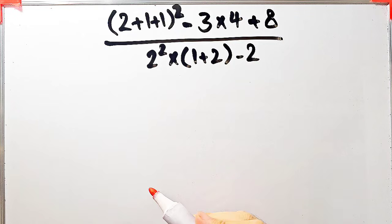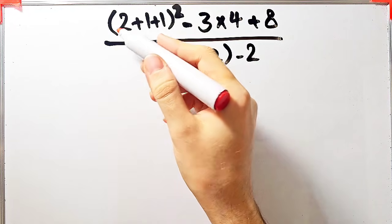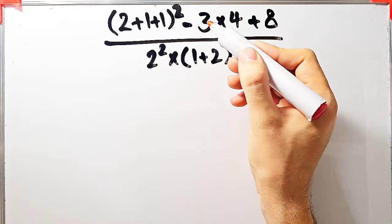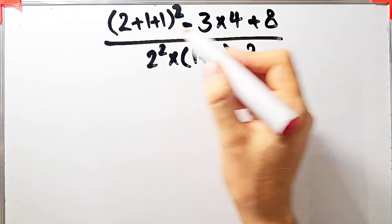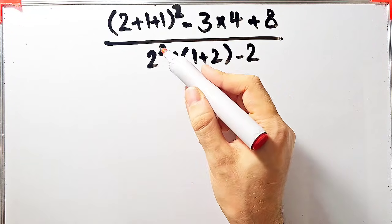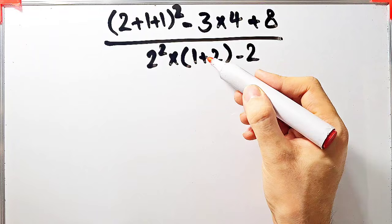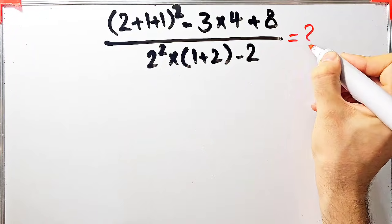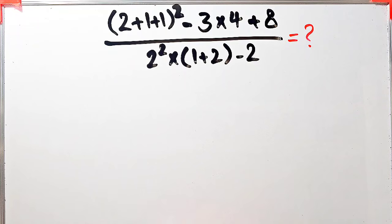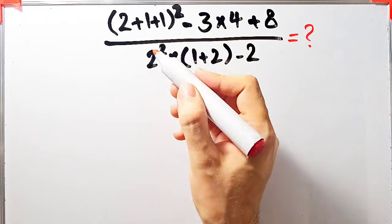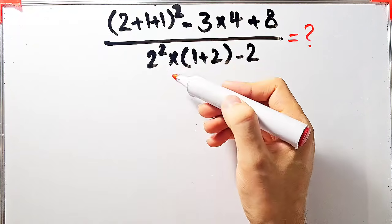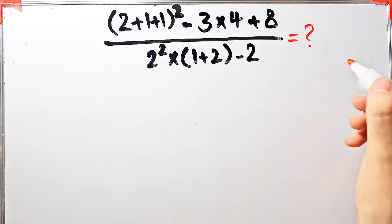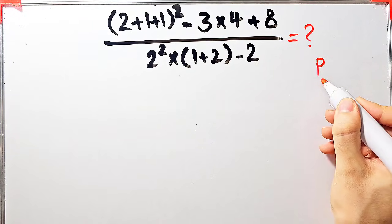Let's solve another question about the PEMDAS rule. We have: open parenthesis 2 plus 1 plus 1 close parenthesis, all to the power of 2, minus 3 times 4, plus 8, over 2 to the power of 2, times open parenthesis 1 plus 2 close parenthesis, minus 2. What is the answer? This question involves parentheses, addition, exponents, subtraction, multiplication, and division.